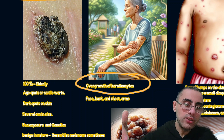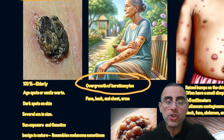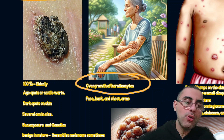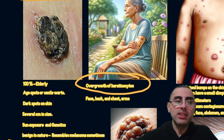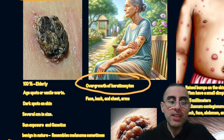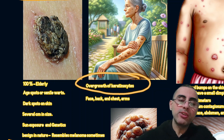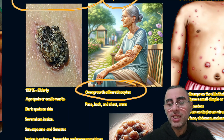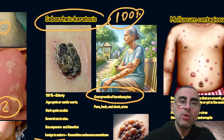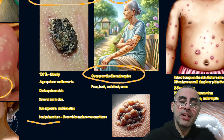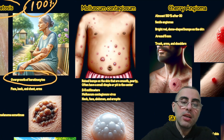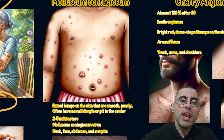Seborrheic keratoses can vary in size but are usually more than one centimeter. Sun exposure and genetics both play a role. They are very benign in nature and never become cancer, but they may resemble melanoma in appearance. Seborrheic keratosis is a totally benign condition.